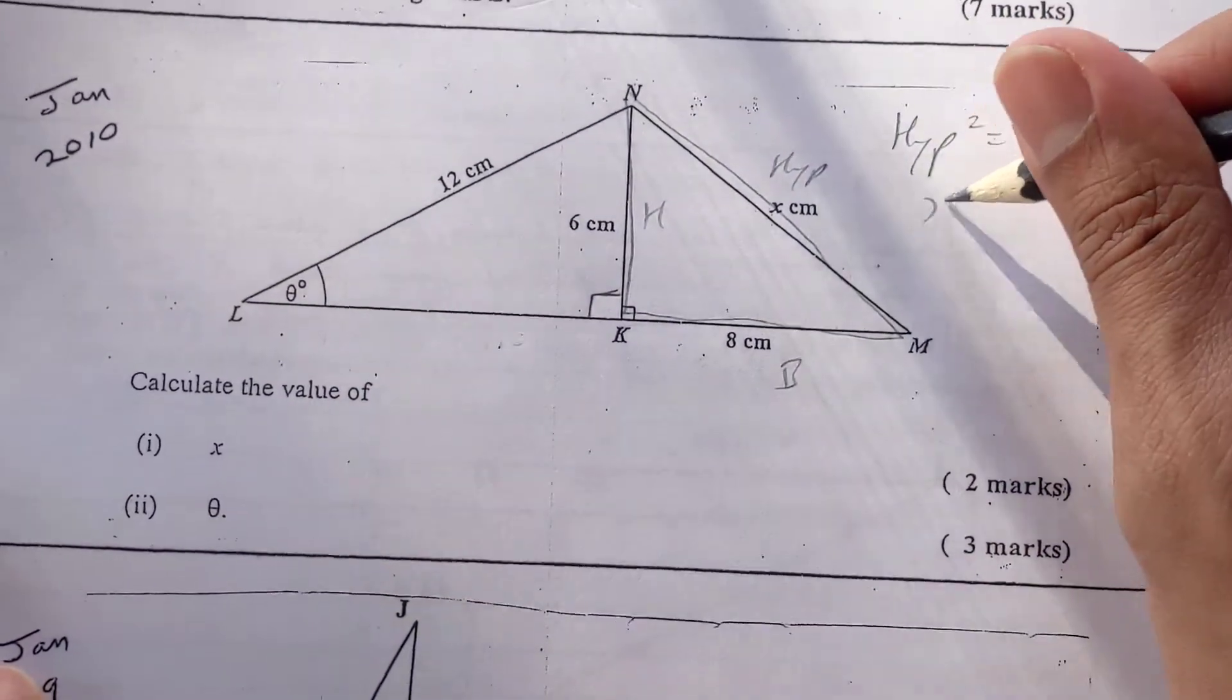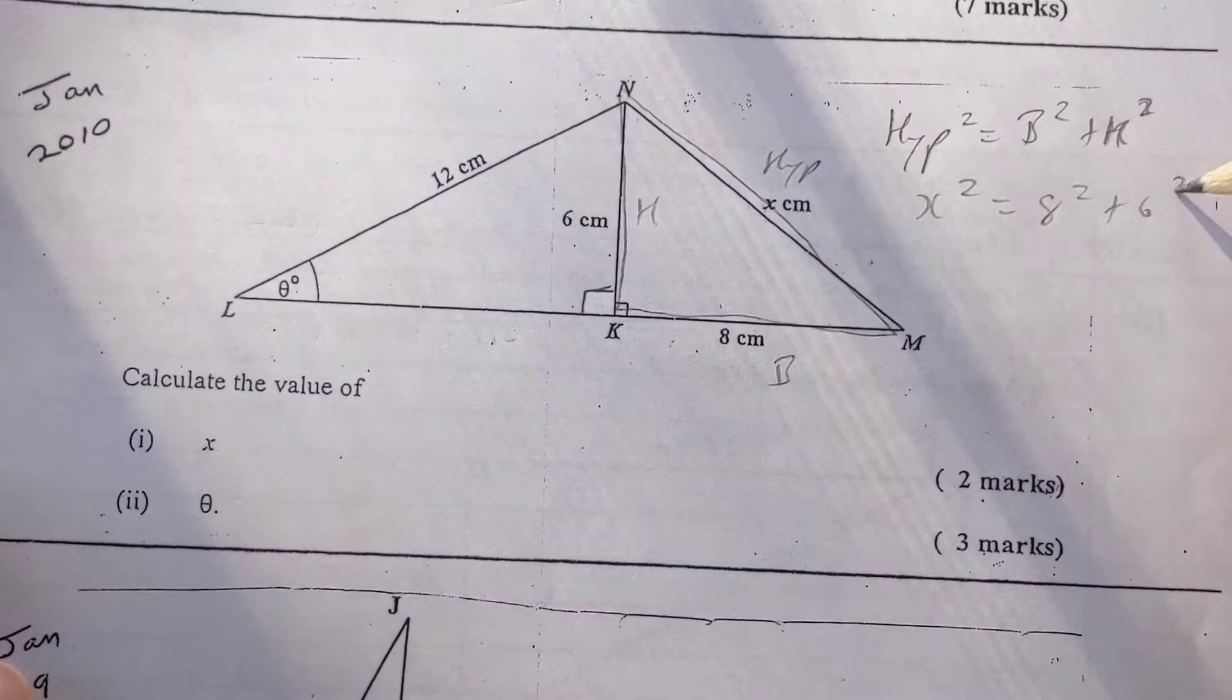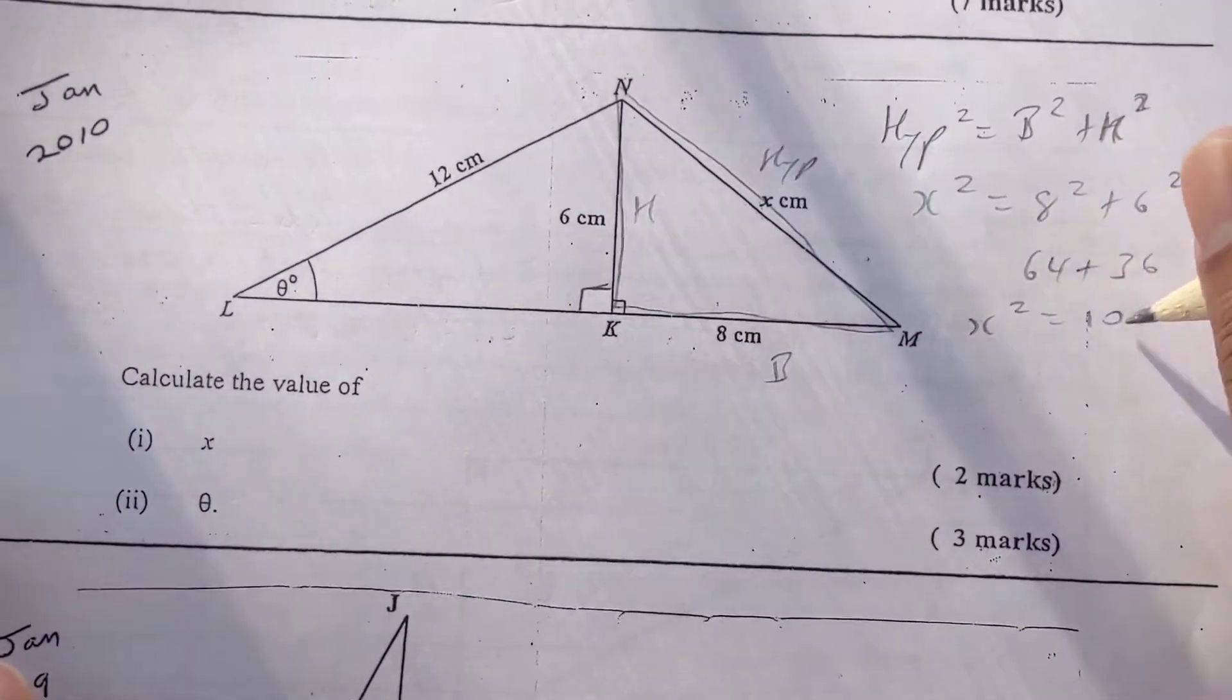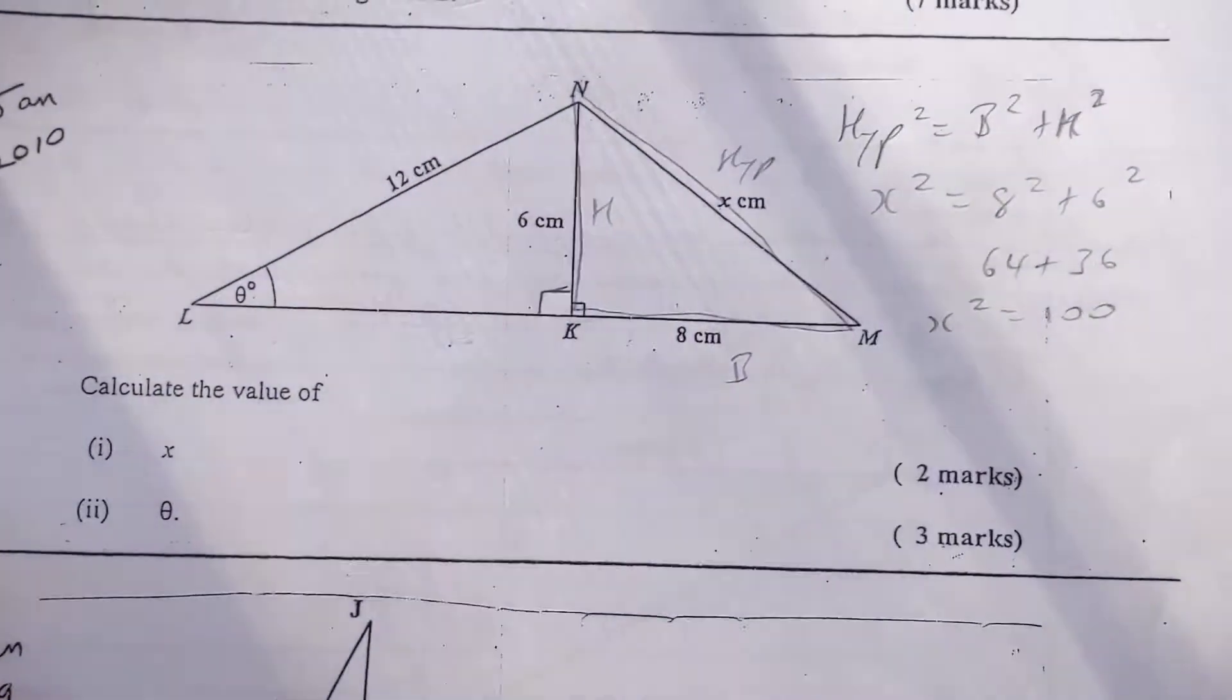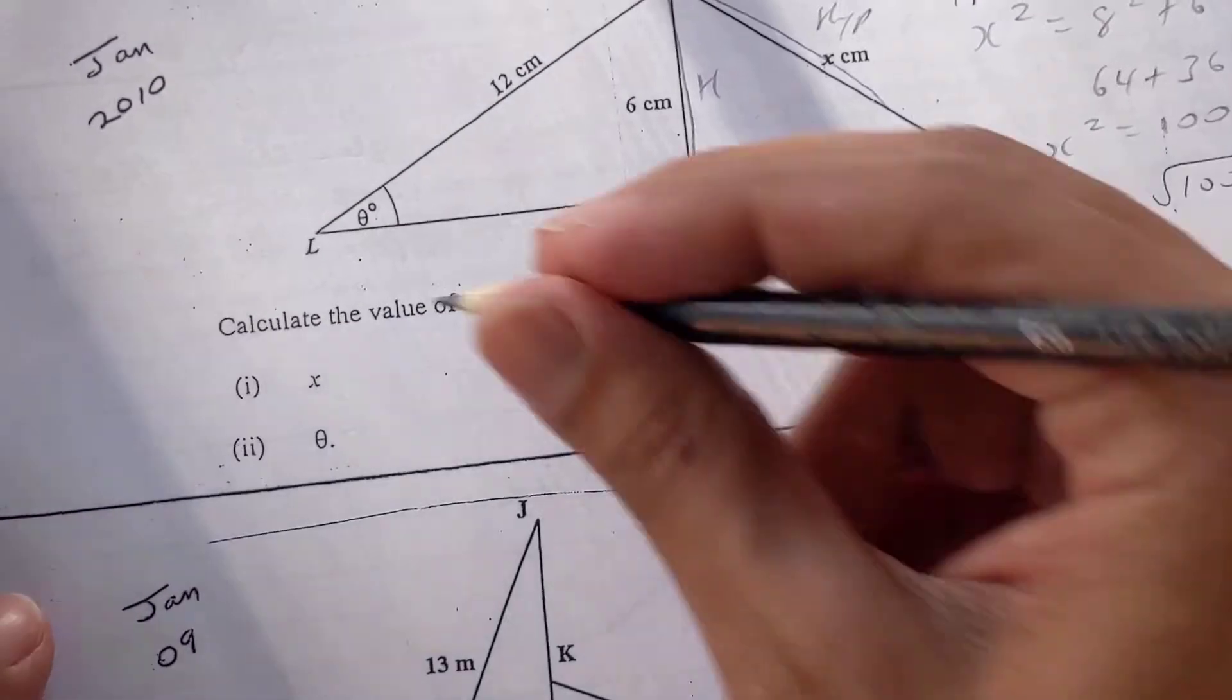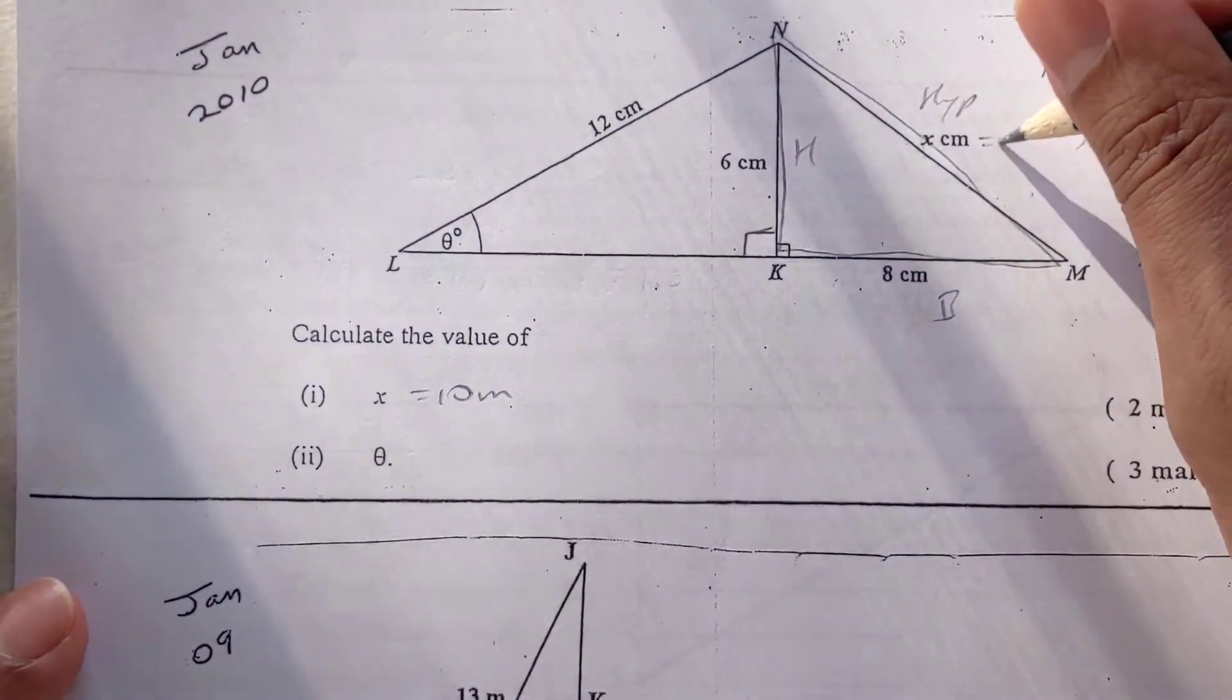So the hypotenuse squared will be X squared. The base squared is 8 squared plus 6 squared. That's 64 plus 36. So X squared is 100, but I don't want X squared. I want X. So X will be the square root of 100. So my answer for X is 10 meters.